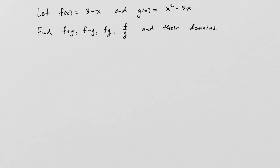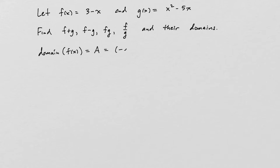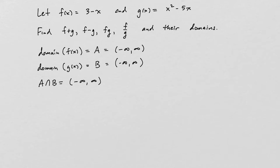For our first example, let f of x equal 3 minus x, and g of x equal x squared minus 5x. We want to find all of the basic combinations along with their domains. The domain of f of x, which we call set A, is all real numbers, and the domain of g of x, set B, is also all real numbers. So A intersected with B is also all real numbers, because both sets are the same.